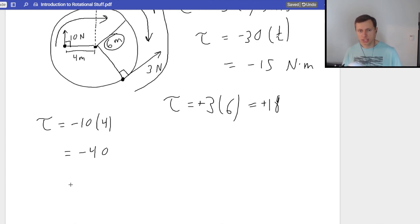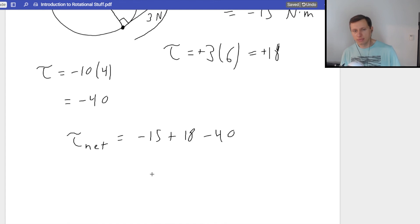I add the three torques together. So net torque is equal to negative 15 plus 18 and then minus 40. We're going to get a final answer of negative 37 newton meters. And there we go. Any questions on net torque?